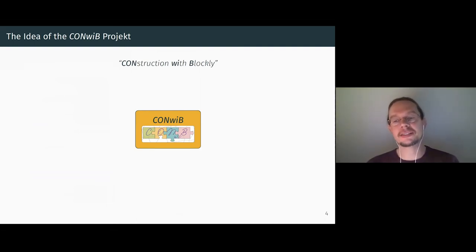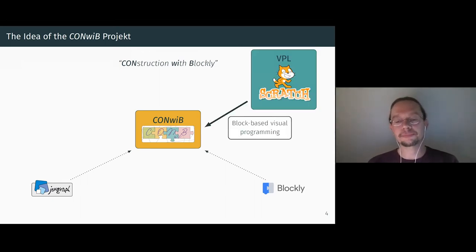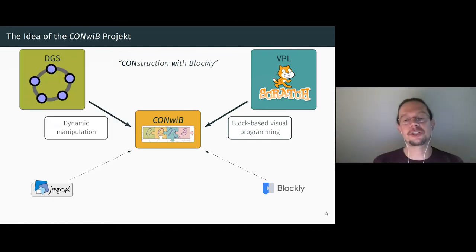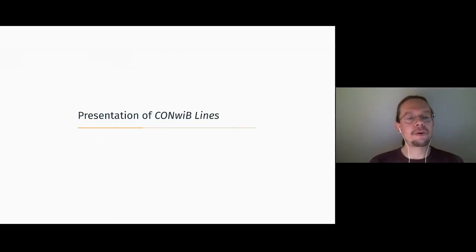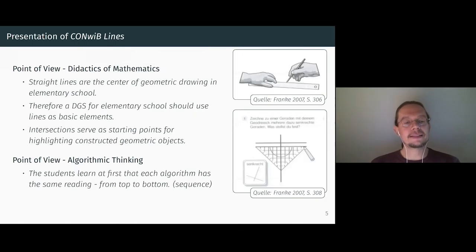Convip is an acronym and stands for construction with Blockly. The corresponding web applications are based on the JavaScript library's JSX graph to visualize the construction and Blockly to create a visual programming environment. Therefore, these programs inherit the Blockly-oriented programming style of languages like Scratch and the dynamic manipulation of geometry software like GeoGebra. This results in applications that make construction descriptions a learning element, but which can also be used to learn algorithmic thinking itself. In the following, I would like to introduce the web application Convip Lines, which was developed within the project and is currently under further development.